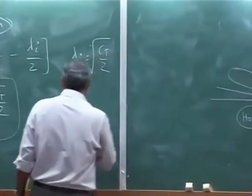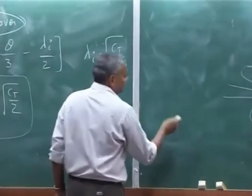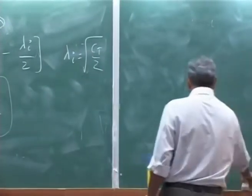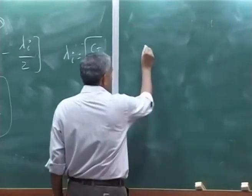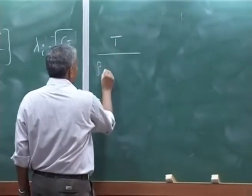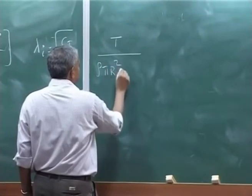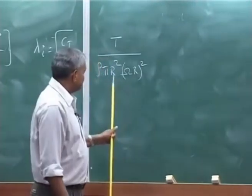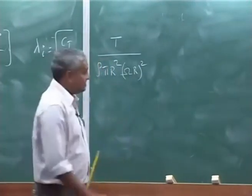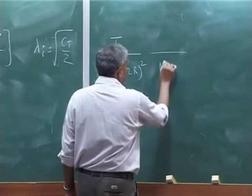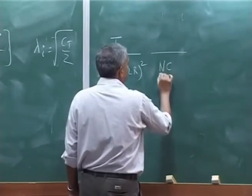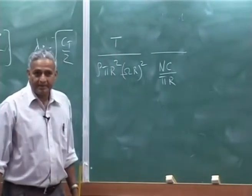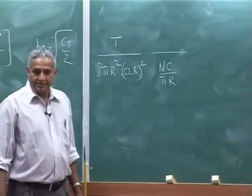Because CT is what? Let me erase this. Why is it called blade loading? Thrust divided by rho pi r squared omega r whole square. This is CT, sigma is N, this is sigma.